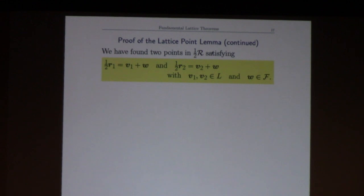So that means there are two points in this dilated region that go to the same point in the fundamental domain. When I write the first point one half r1 as a lattice point plus a fundamental domain point, and the second one half r2 as a lattice point plus a fundamental domain point, their fundamental domain points are the same. That's what all that work was to do - to find two points in the dilated region that when you decompose them they hit the same fundamental domain point.